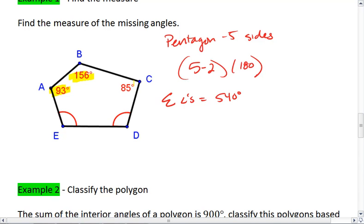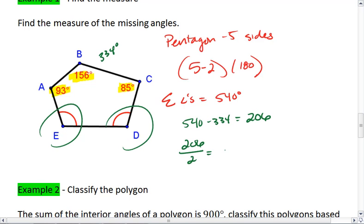I can then add up these numbers. So we take 93 plus 156 plus 85 gives us 334. 540 minus 334 gives me 206. So this 206 degrees has to be split between angle E and angle D. 206 divided by 2 is 103. So the measure of angle E, which equals the measure of angle D, equals 103 degrees.